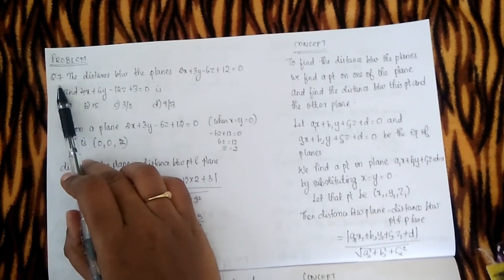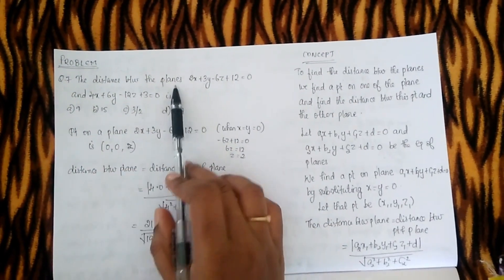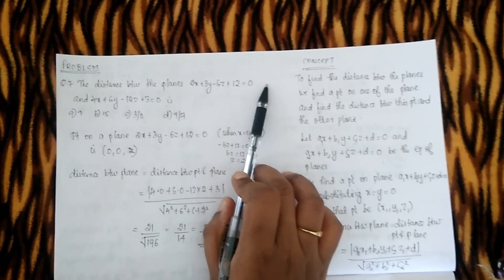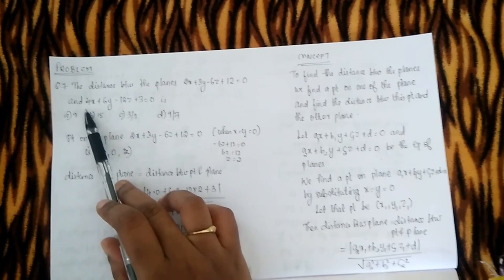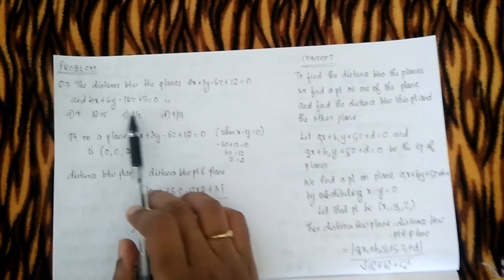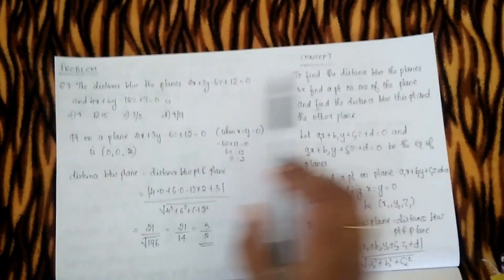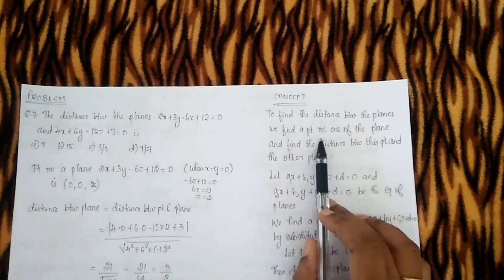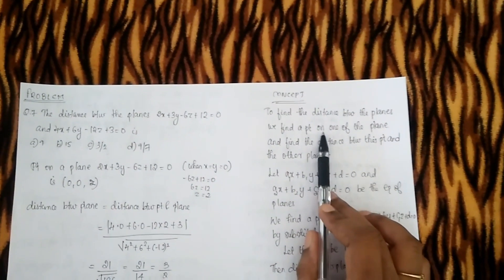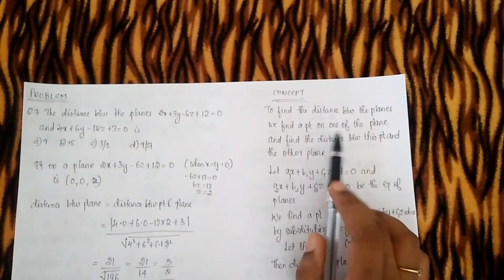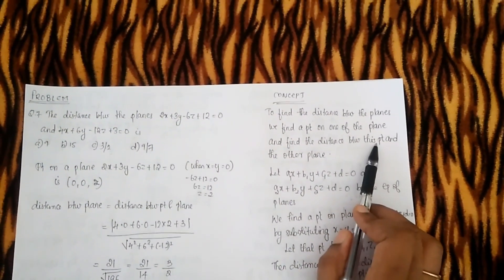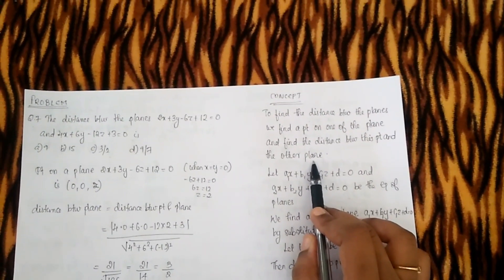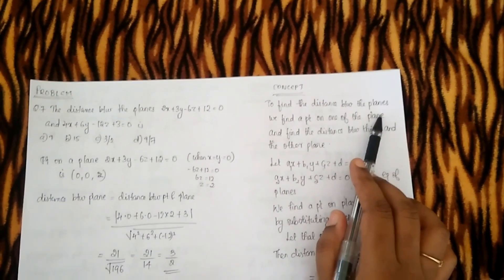This question is: the distance between the planes 2x + 3y − 6z + 12 = 0 and 4x + 6y − 12z + 3 = 0. The concept is: if you have a plane, a point, and the distance between the planes.